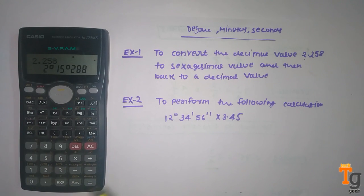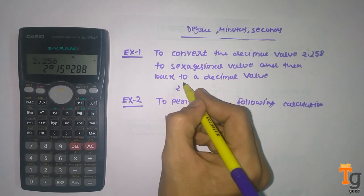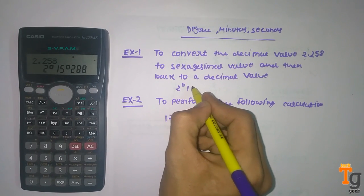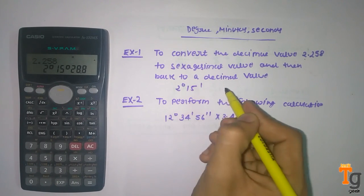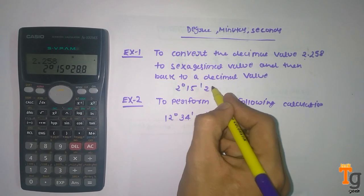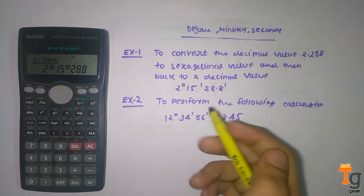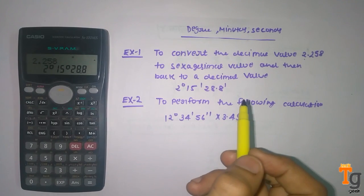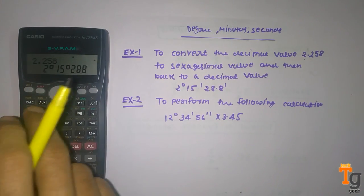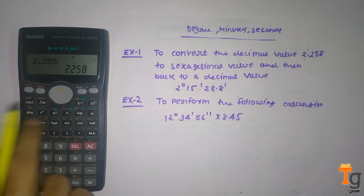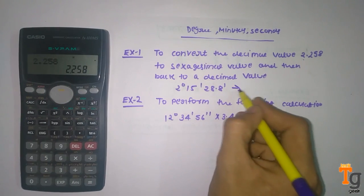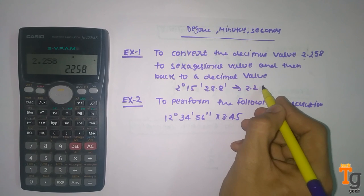And this is your sexagesimal value, 0 degrees 28.8 minutes. And now we have to convert back to decimal value, then you have to press this button again, and it will convert to 0.258.